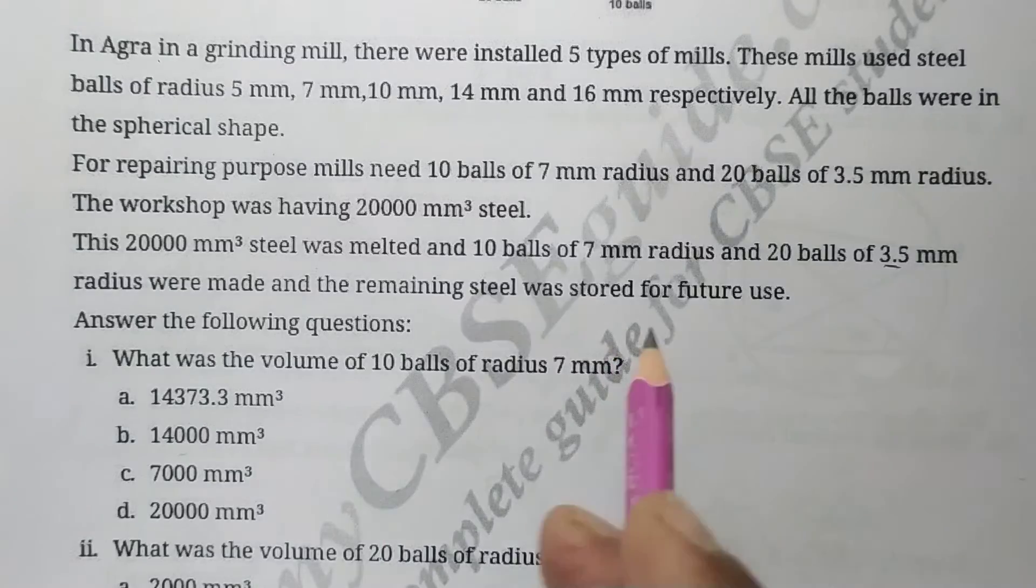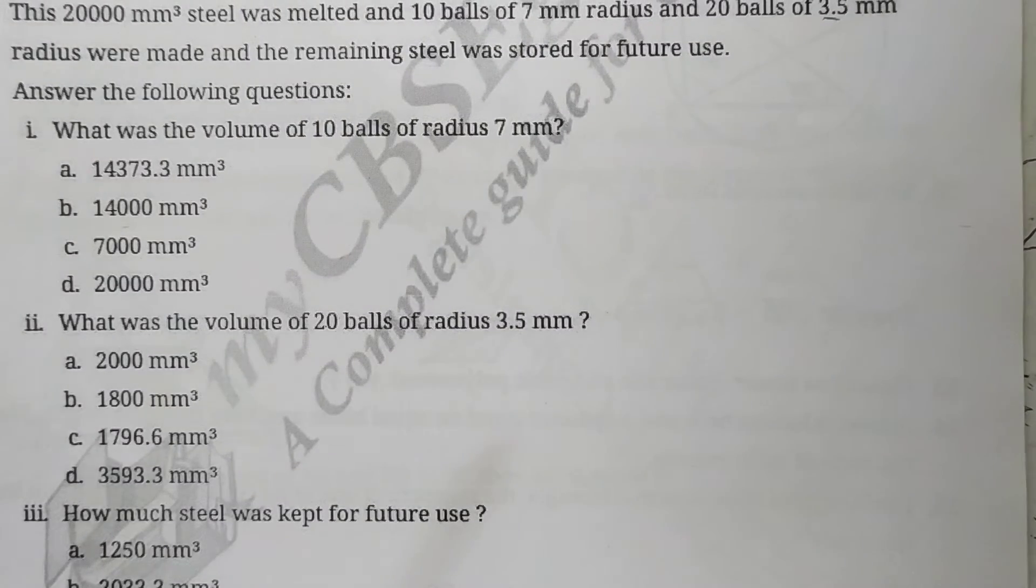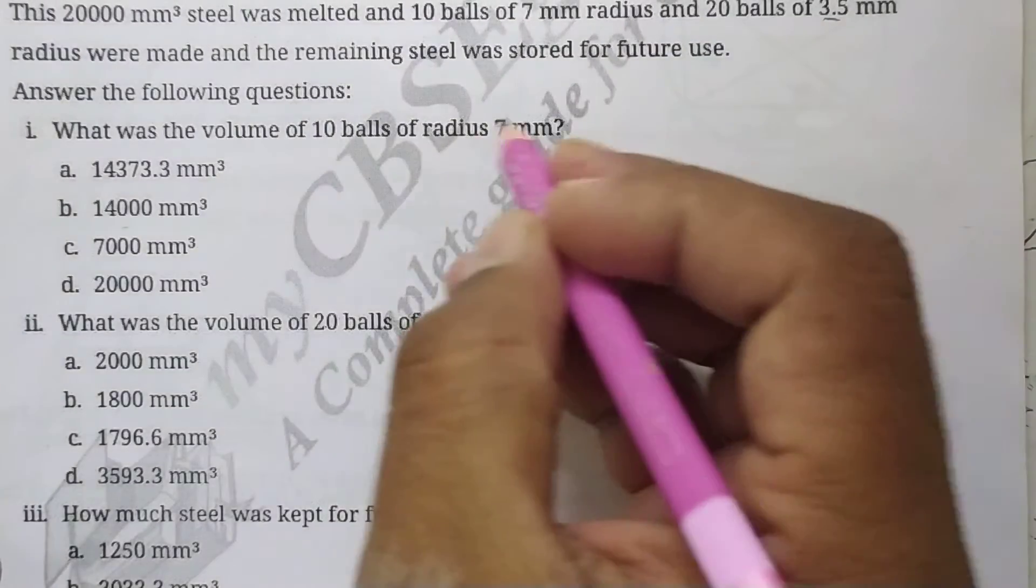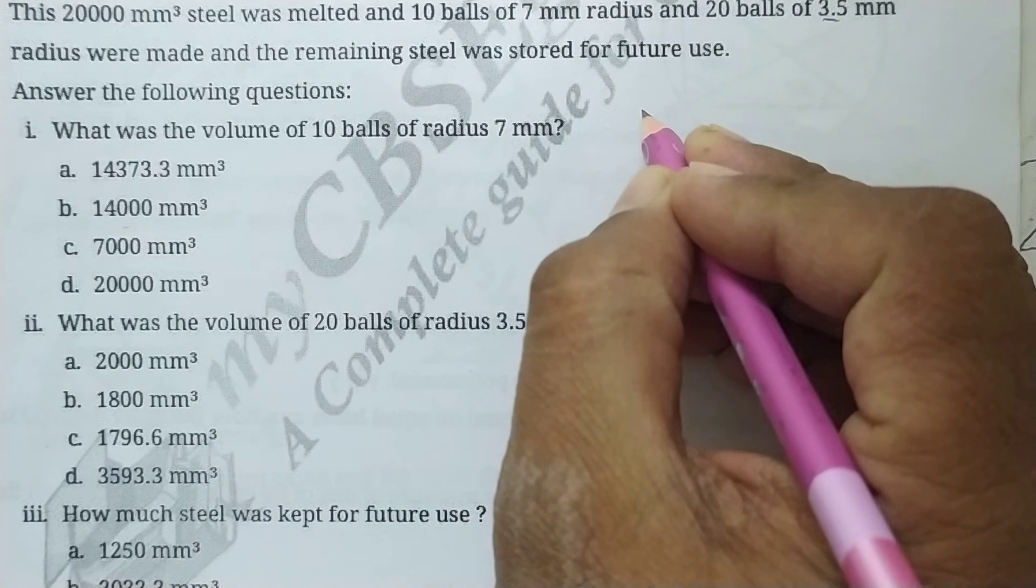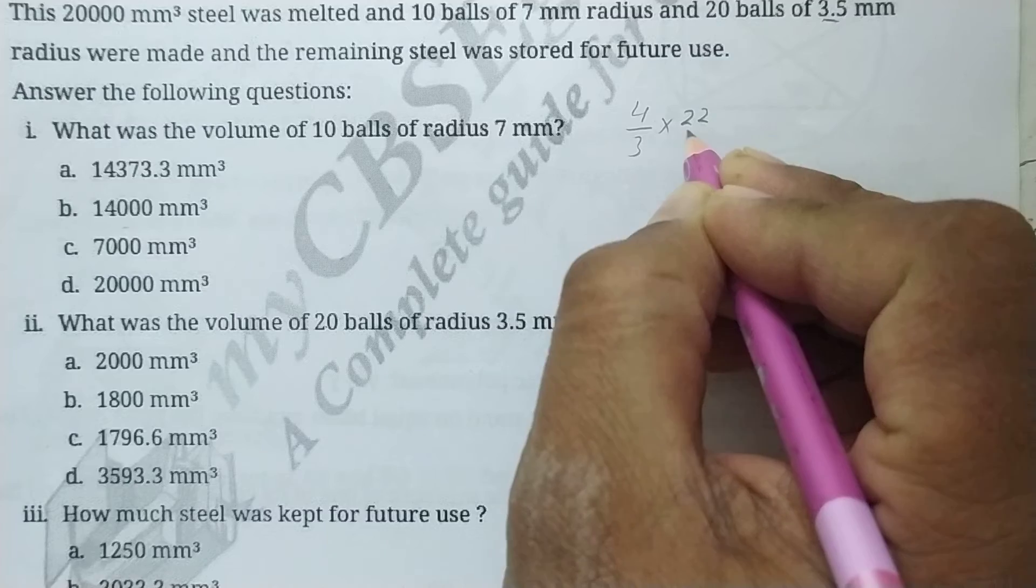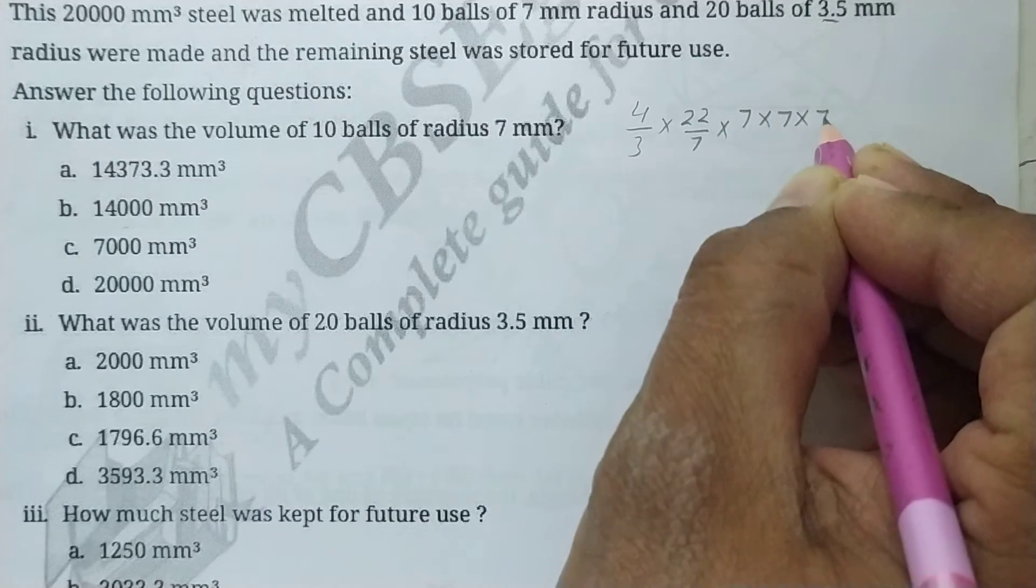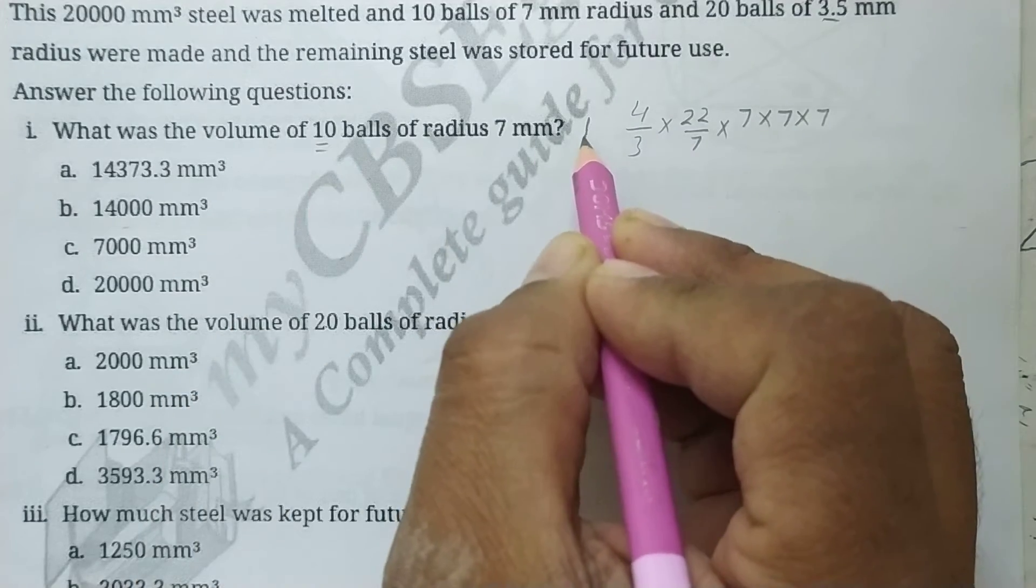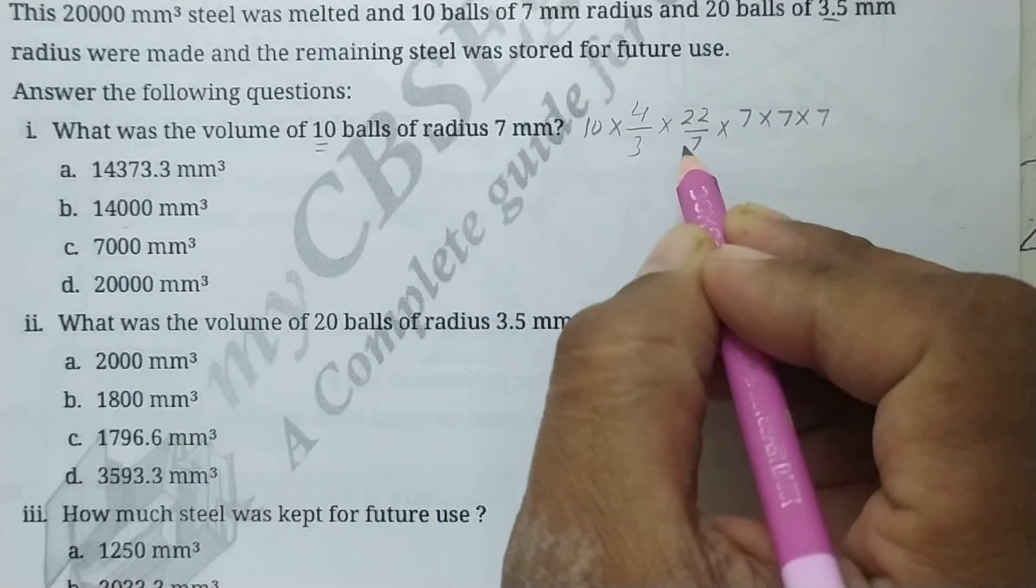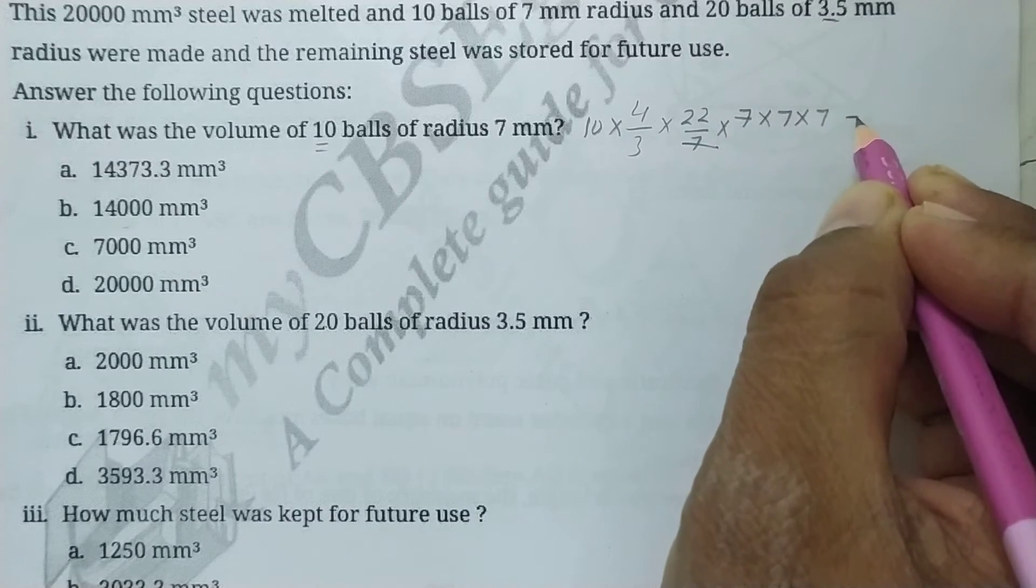So what is the first question? Let's see. What was the volume of the 10 balls of 7 mm radius? So you know sphere's volume is 4 by 3 pi r cube. So pi is 22 over 7, r is 7 cube means 7 into 7 into 7, and there are 10 such balls, so multiply by 10. So 7 ones are 7 ones are, okay, so if you multiply, 7 sevens are 49 into 88.